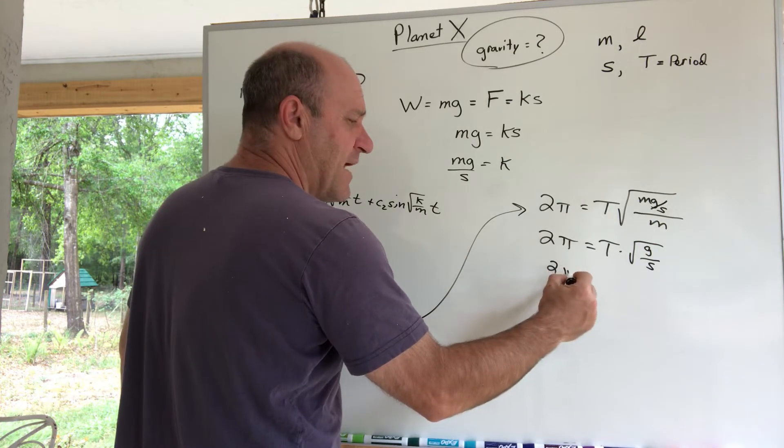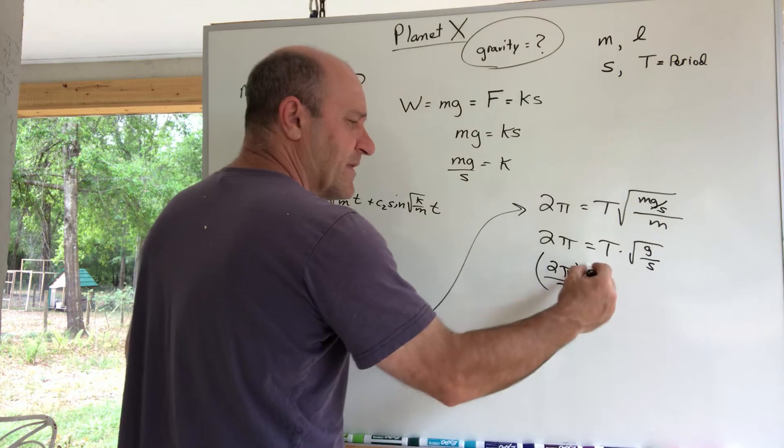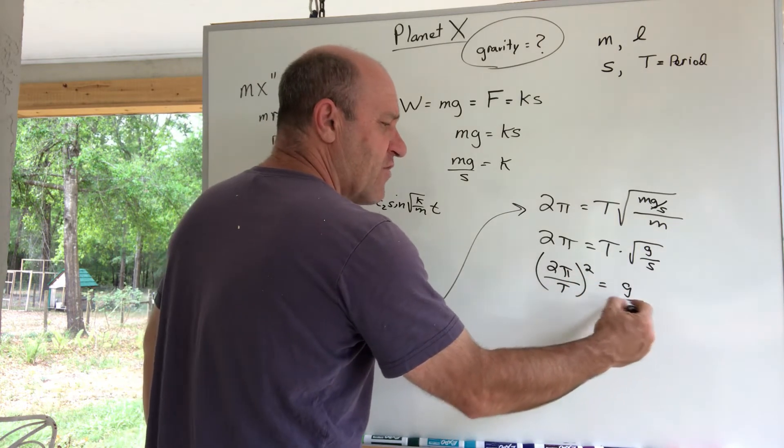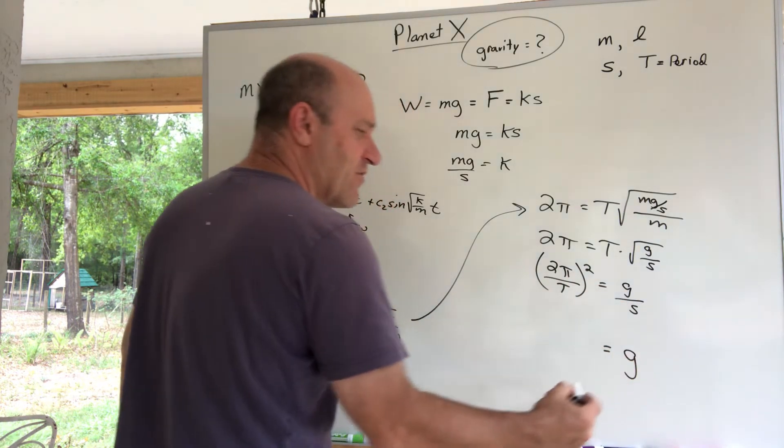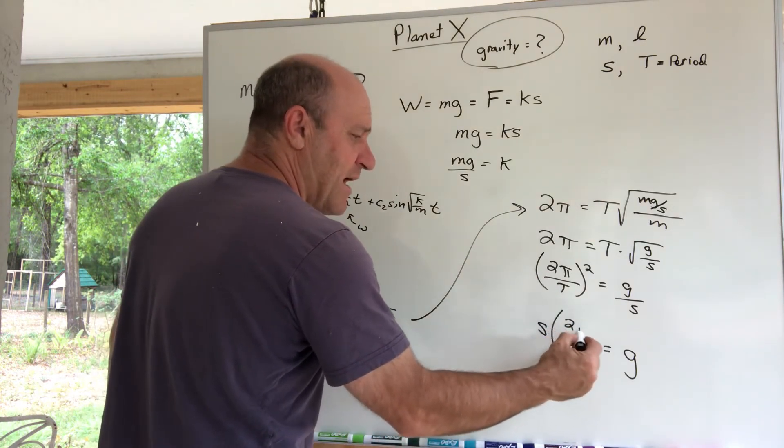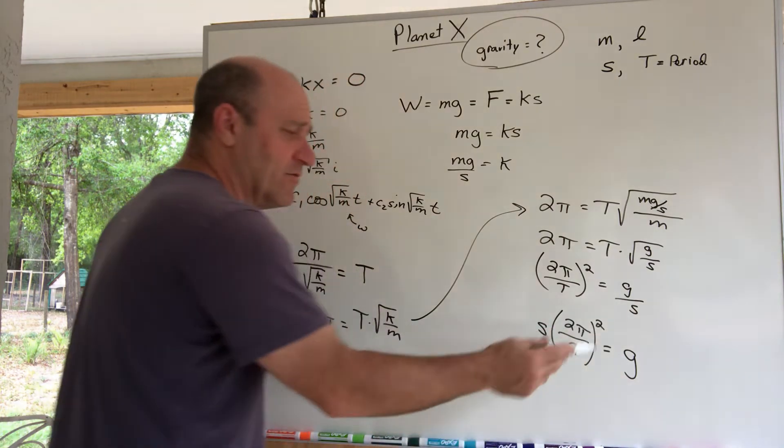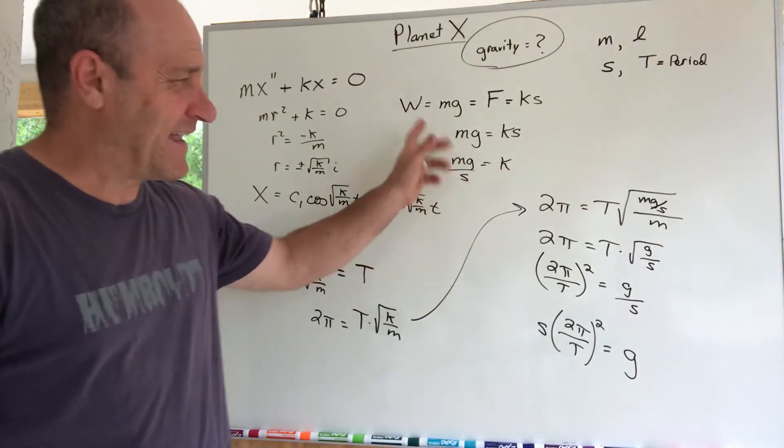And if I divide by m then I get the period times, if I divide by m I get the √(g/S). This is awesome. I'm gonna divide by T, 2π divided by T squared, and that gives me g/S. So I think I just found g.